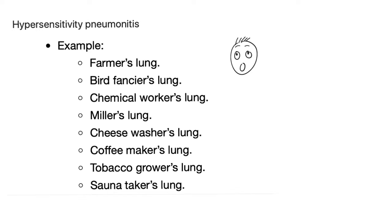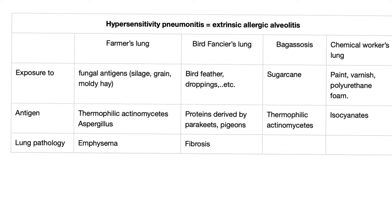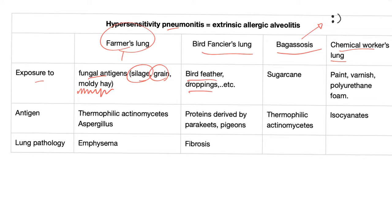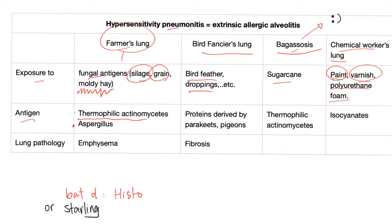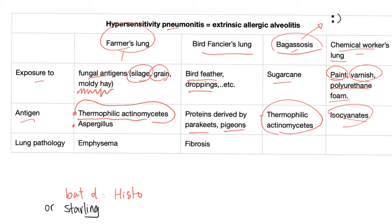There are more than 100 restrictive lung diseases. Here are the four most important subtypes for your exam: farmer's lung, bird fancier's (or bird keeper's) lung, bagassosis, and chemical worker's lung. For farmer's lung, exposure is to fungal antigens such as silage, grain, and moldy hay; the antigen is thermophilic actinomycetes or Aspergillus. For bird keeper's lung, exposure is to bird feathers and droppings — don't confuse this with bat droppings, which are related to histoplasmosis. Bagassosis involves sugarcane; the antigen is again thermophilic actinomycetes. Chemical worker's lung involves exposure to paint, varnish, polyurethane, and foam; the antigen is isocyanates.